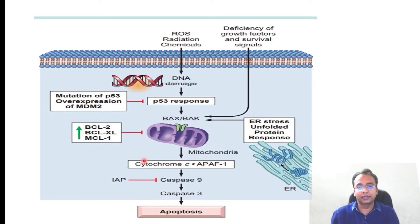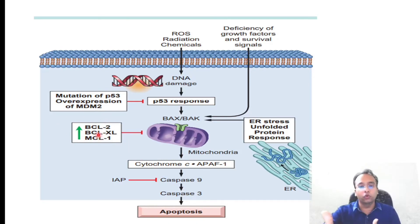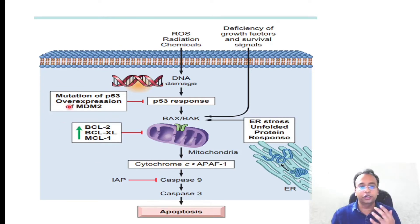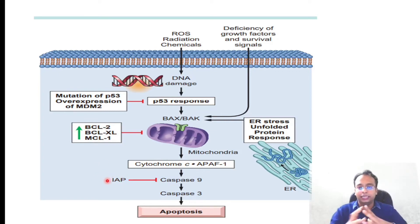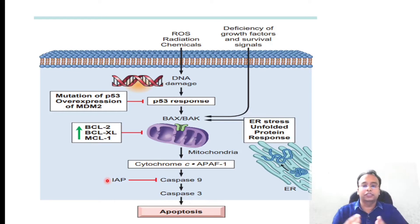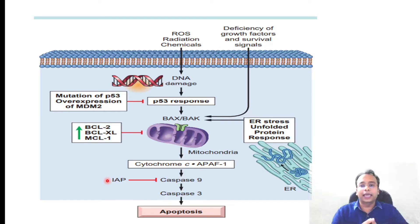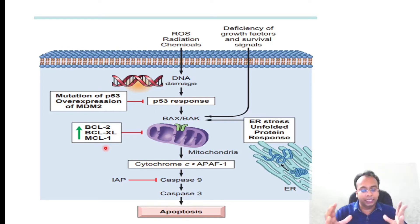The third and fourth mechanisms involve overexpression of anti-apoptotic proteins. In cancer cells there is overexpression of anti-apoptotic proteins, particularly BCL2, BCLXL, MCL1, and physiological inhibitors of apoptosis. All these anti-apoptotic proteins are overexpressed in cancer cells. That is why they will not die by apoptosis — the anti-apoptotic proteins prevent apoptosis and the cancer cell becomes immortal.